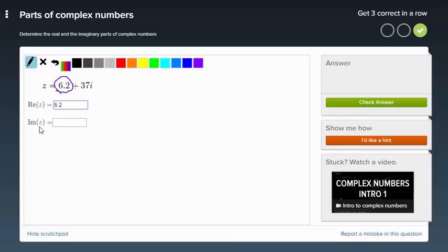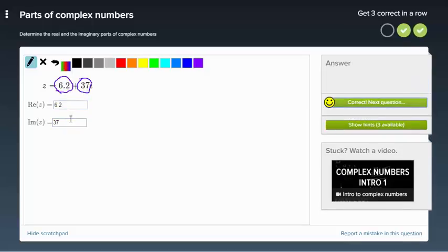My imaginary part would be the part that has, or the number, or the coefficient that has an i next to it. Not including the i, just the number. So my imaginary part would be 37. So I'll put a 37 in there. That's it.